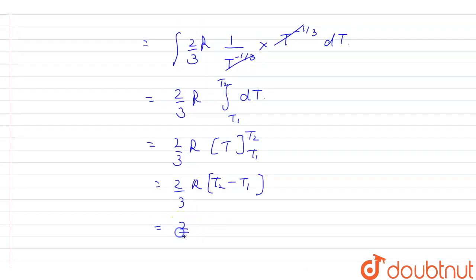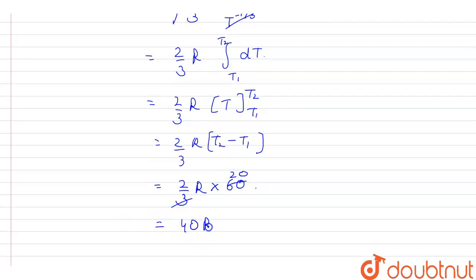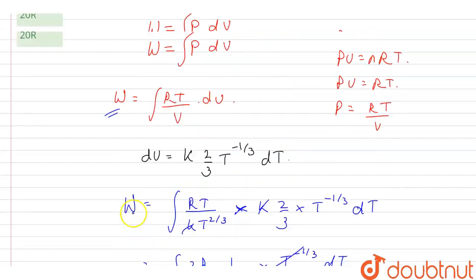So this will be equal to (2/3)R × 60, which equals 40R. This is the work done, so the correct option will be option C.